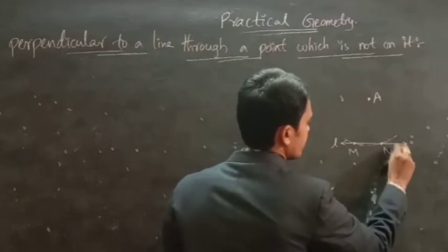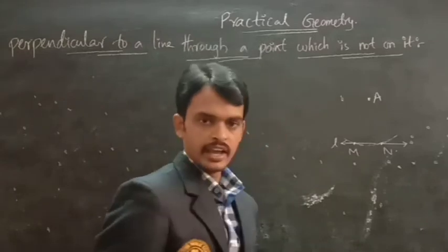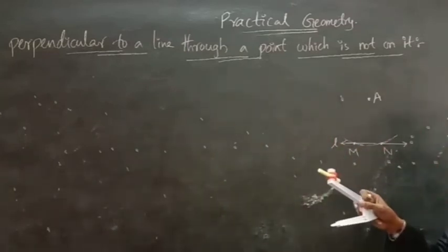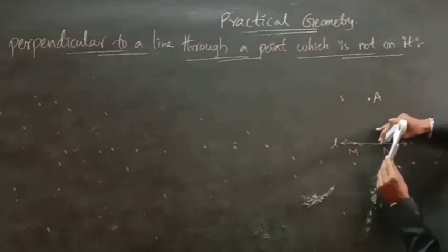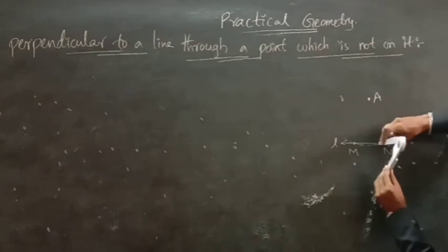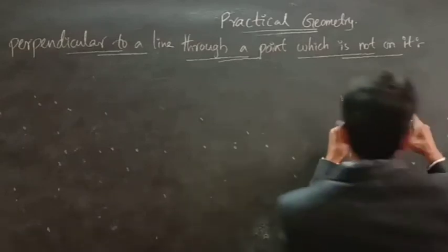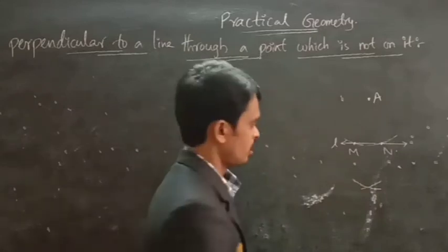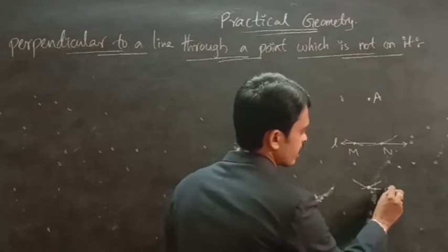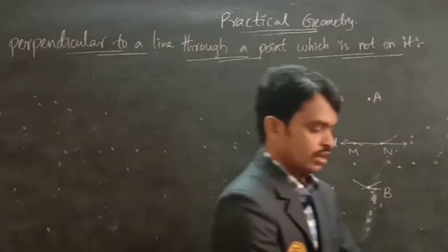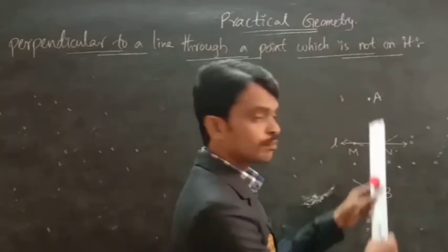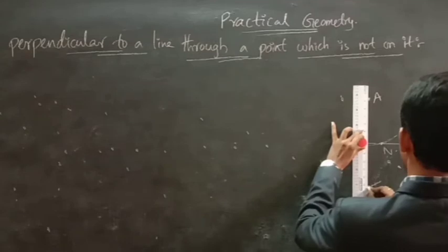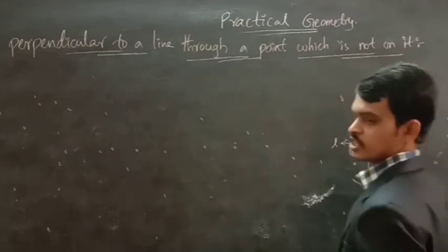The arcs intersect the line at two points M and N. With the same radius and centers M and N, draw two arcs. The intersection of those two arcs is named B. Now join the points A and B.